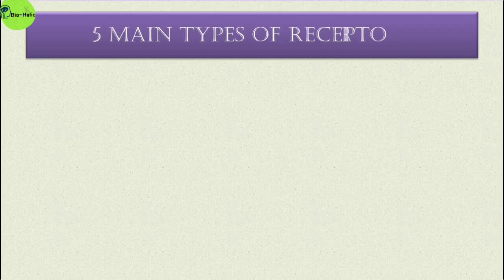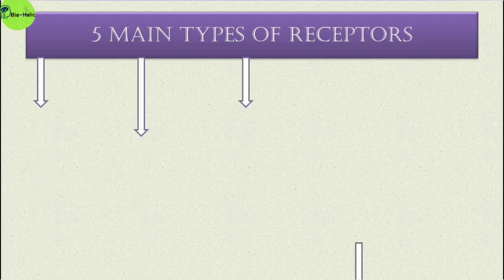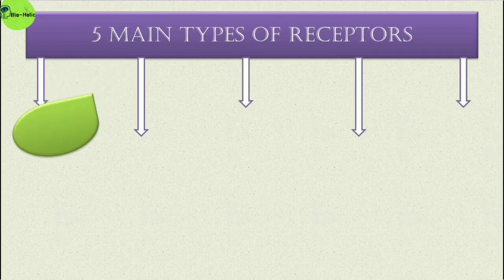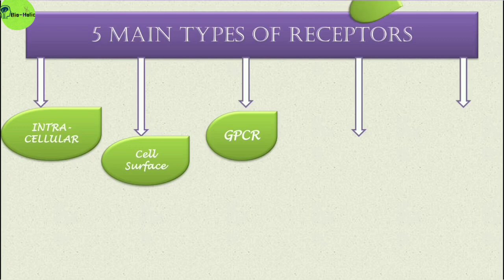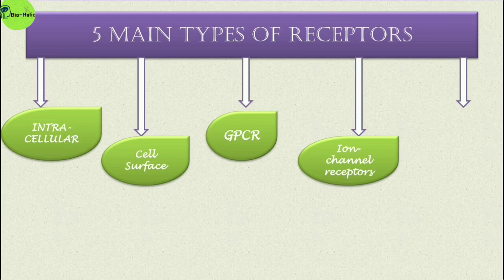There are mainly five types of receptors involved in signal transduction. The first is intracellular receptors, second is cell surface receptors, third is GPCR — that is G protein coupled receptor, fourth is ion channel receptors, and fifth is tyrosine kinase linked receptors.